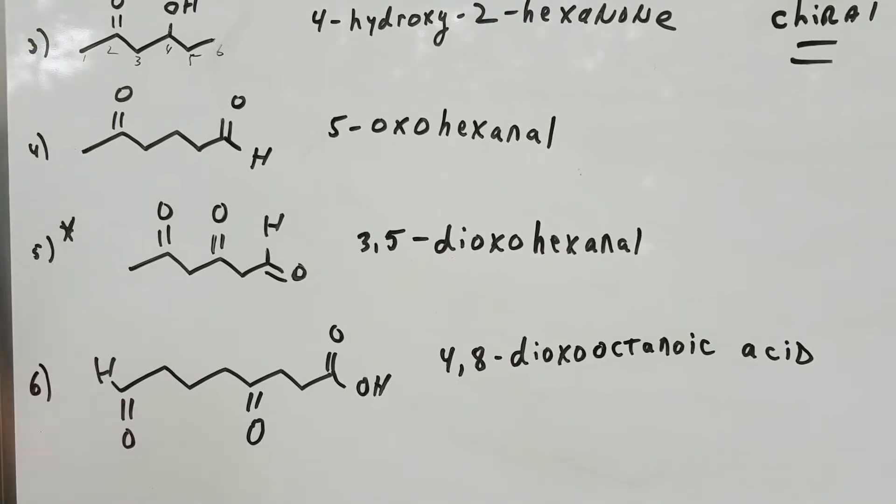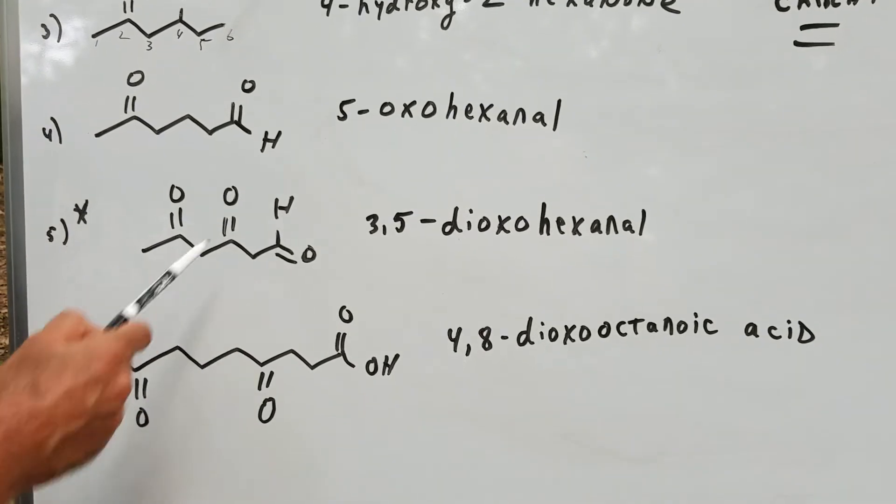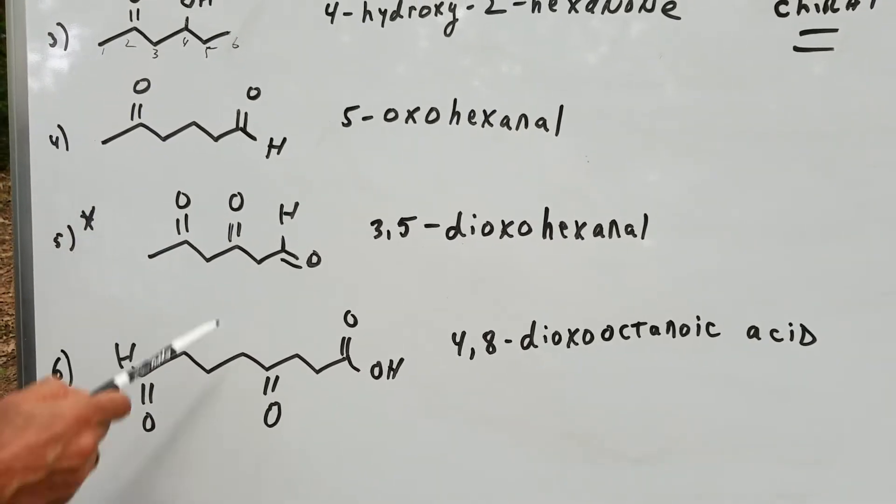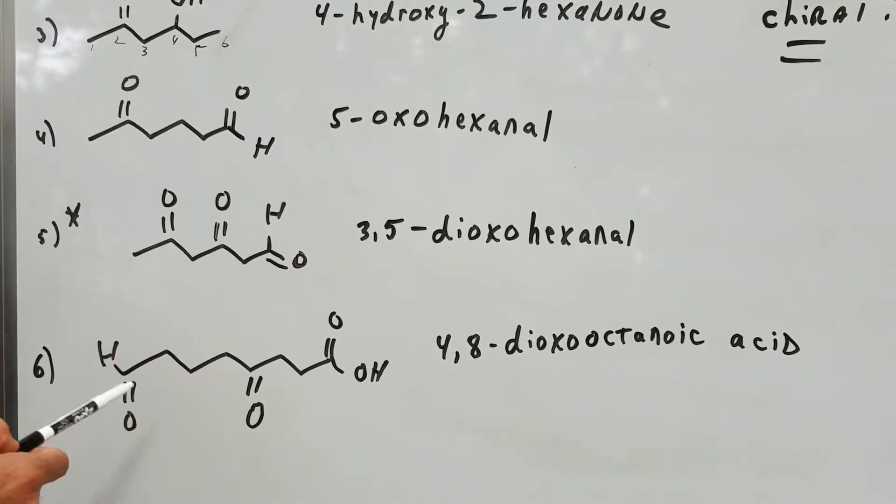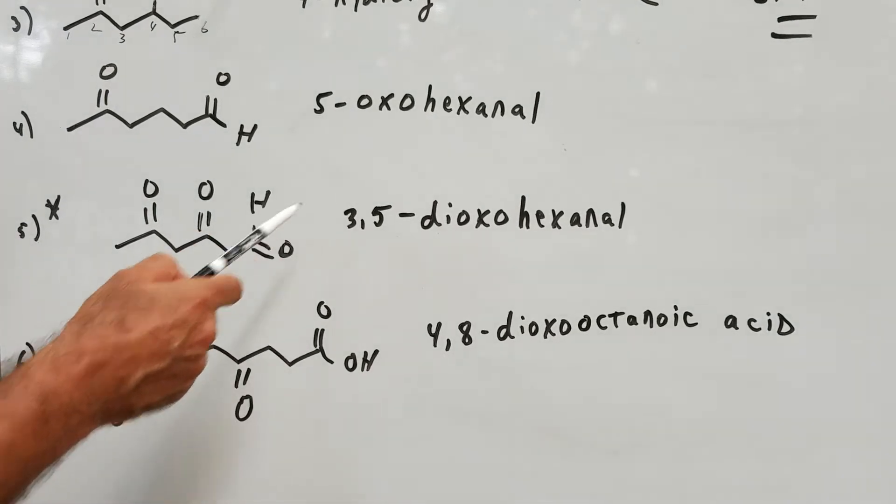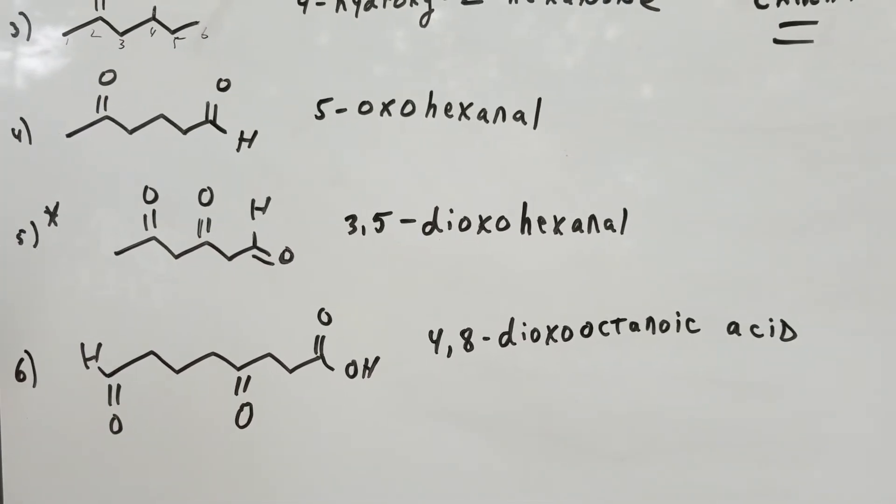On the next one you would do the same thing. The aldehyde gets the priority, but you have two oxo groups, one's on the three and one's on the five. So that's a dioxo. Putting it together you would get 3,5-dioxohexanal.